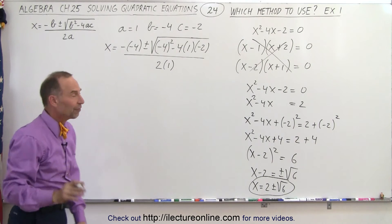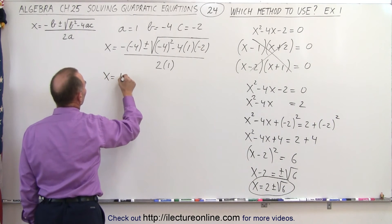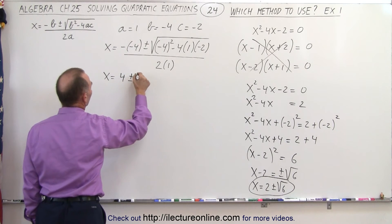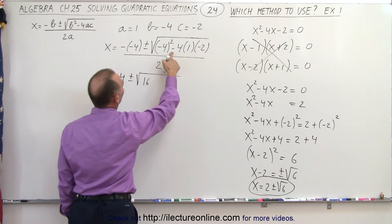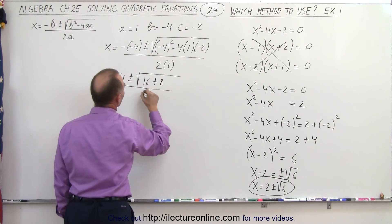And now we have to simplify that. So we have x is equal to minus times a minus which is four plus or minus the square root of 16 minus four times a minus two that gives me plus eight all divided by two.